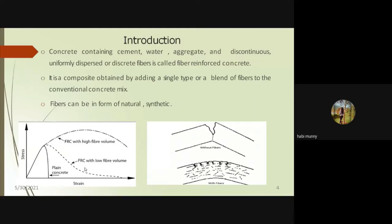From the stress-strain graph for plain concrete, adding fibers increases strength; adding a higher volume of fibers increases it further. The second diagram shows that without fiber, a structural element behaves differently, whereas with fiber addition we can bridge cracks effectively.